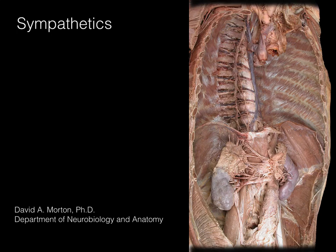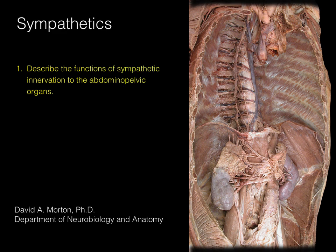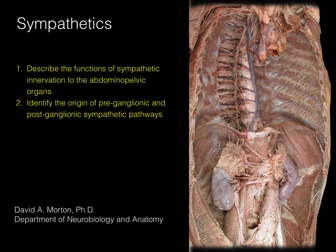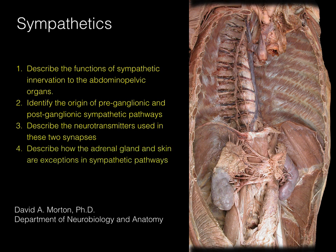We are now going to focus on the sympathetic portion of the autonomic nervous system. Our objectives are: one, describe the functions of sympathetic innervation to the abdominal pelvic organs; two, identify the origin of preganglionic and postganglionic sympathetic pathways; three, describe the neurotransmitters used in these two synapses; and four, describe how the adrenal gland and skin are exceptions in sympathetic pathways.